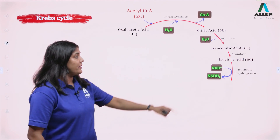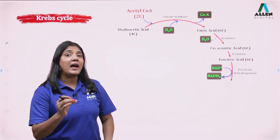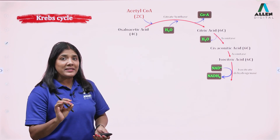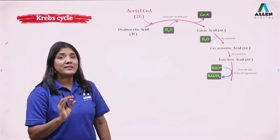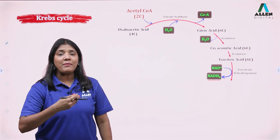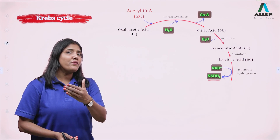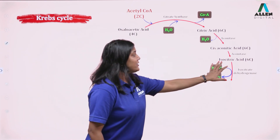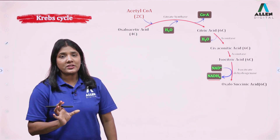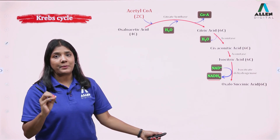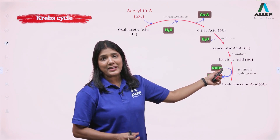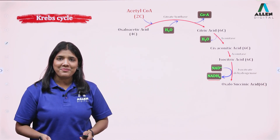Now pay attention to the fate of isocitric acid. The enzyme is isocitrate dehydrogenase — meaning hydrogen will be removed. This is the first step where we see the formation of NADH2, in the presence of enzyme isocitrate dehydrogenase. The question can also be framed as: when isocitric acid is converted into oxalosuccinic acid, what reaction is occurring? It is a dehydrogenation step, with the enzyme being isocitrate dehydrogenase — taking hydrogen from isocitric acid.